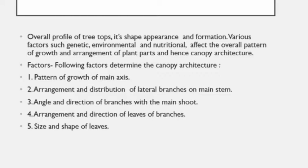Factors that determine canopy architecture include: pattern of growth of the main axis, arrangement and distribution of lateral branches on the main stem, angle and direction of branches with the main shoot, arrangement and direction of leaves on branches, and size and shape of leaves. Two important characters of canopy architecture are branching and leaves.